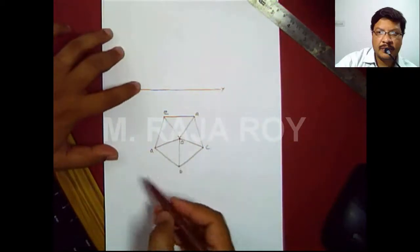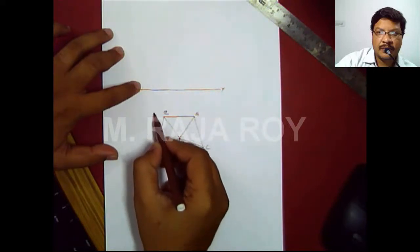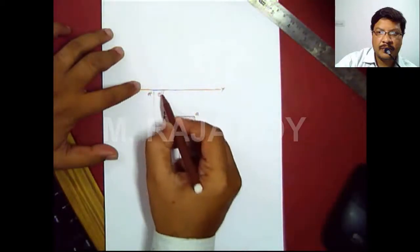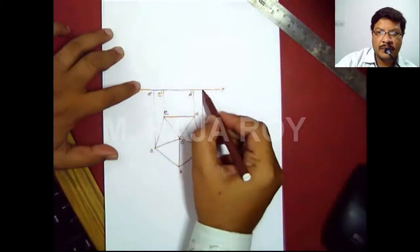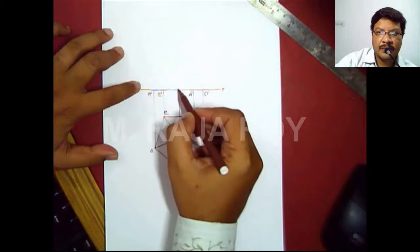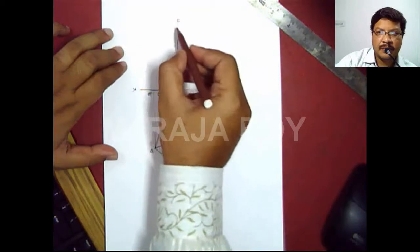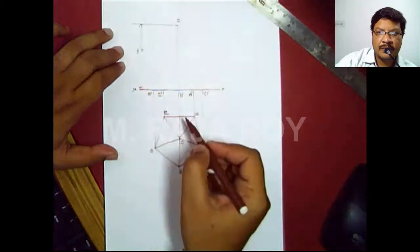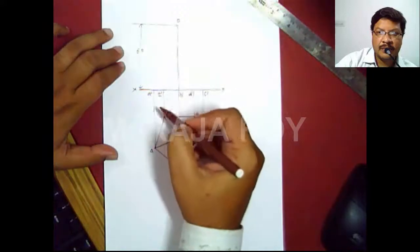Now from the top view, project the front view by drawing the projectors. Draw the projector to get A'. Here I will get E'. Somewhere here I will get D'. Here I will get B'. I will extend this projector to a height of 60. Somewhere here I will get O' — this is the axis height of 60. This is the slanted edge O'B' in the front view.